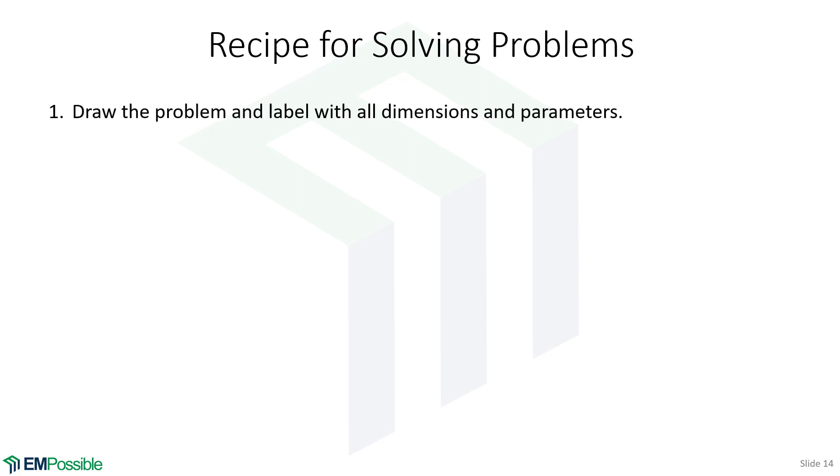So here is our recipe. The first thing is to draw the problem and label all of the dimensions, all of the different parameters. If you know the permittivity dimensions of everything, so sketch it and draw it. That is step one.